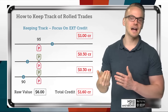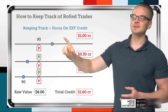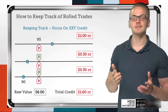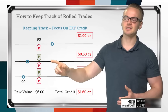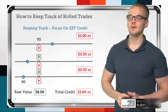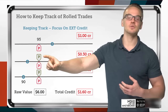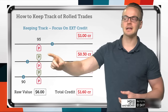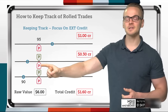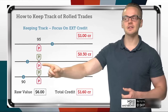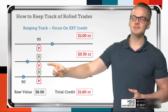When we look at puts being out of the money, they're below the stock price — the opposite is true for calls, which are out of the money above the stock price. Now let's say at some point the trade goes against us, the stock price dips below our short put at 95, and we decide to roll. We buy back our current expiration 95 put and sell a new 95 put in a further-dated expiration cycle. Because that new short put has more time than the one we're buying back, there's more value in the put we sell, and I can actually collect a credit — let's say a 30-cent credit.